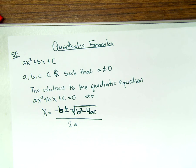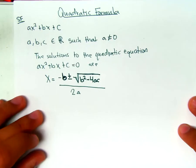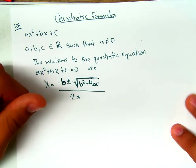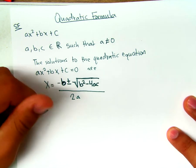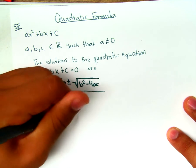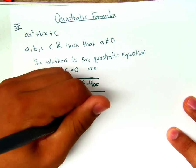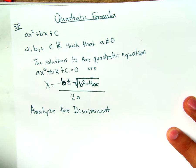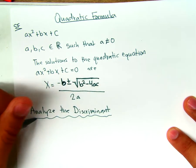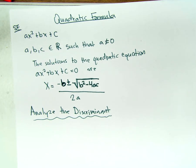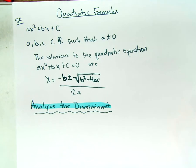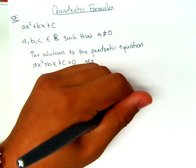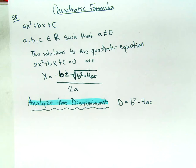So before we begin to use it, we want to be able to analyze it. The part that we're going to analyze is the part under the square root, and that part is called the discriminant. We're going to analyze the discriminant. The discriminant equals D equals b squared minus 4ac.